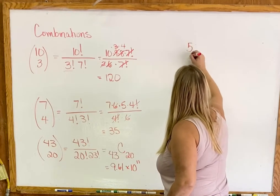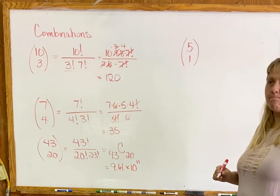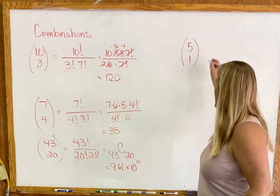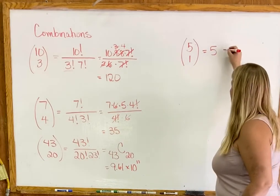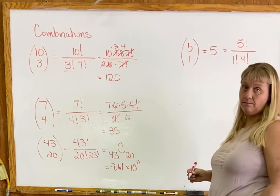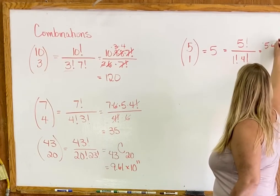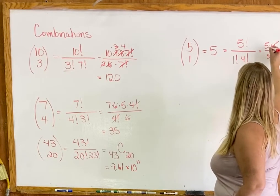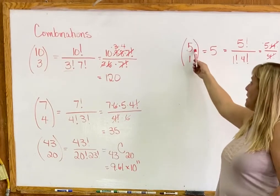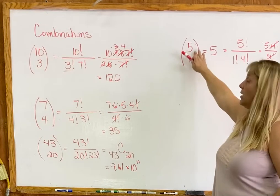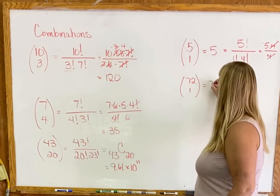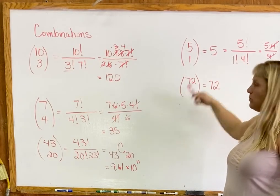Let's look at some special cases. Five choose 1: you have five people and need to choose one — hopefully you realize there are just five different options. The formula gives 5! over 1! times 4! = 5 × 4! over 4! = 5. Whenever you have any number choose 1, the answer is always just that number. So 72 choose 1 is simply 72.